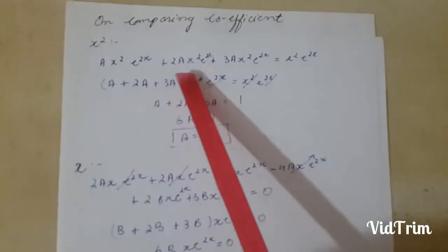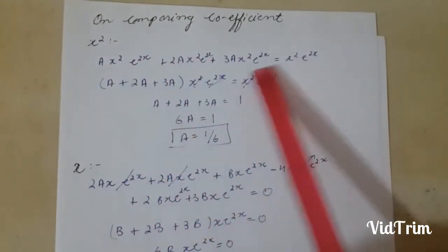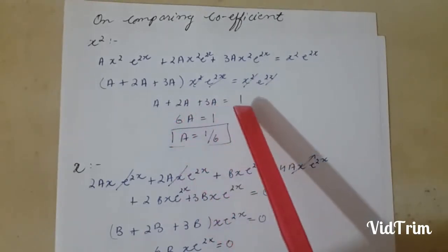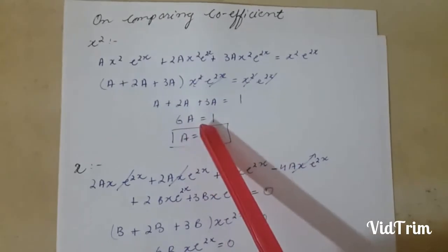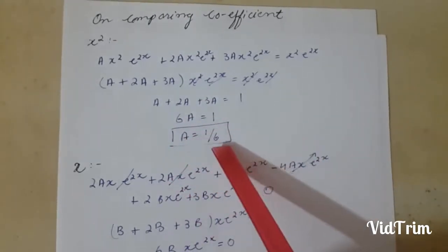I simply take x squared and e^x common and divide, and I got 1. By adding I got 6a, and I get the value of a equals 1 over 6.